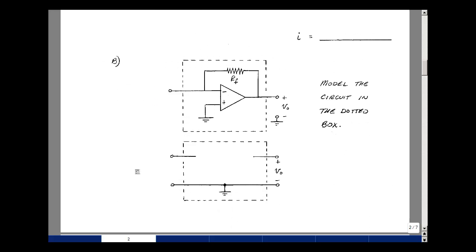Question 1b is, given this circuit in the dotted box, can you model this with the components of our course? In other words, resistor, capacitor, inductor, or controlled source, to replace this by an equivalent circuit.